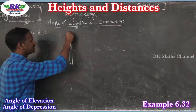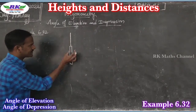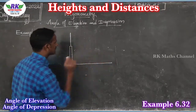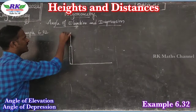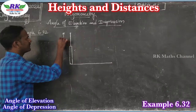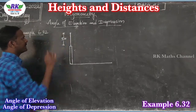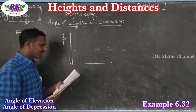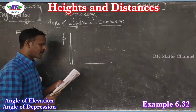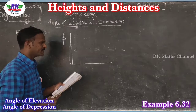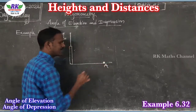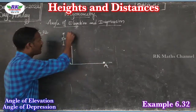The pole is on top of the tower. There is a point A on the ground level. The angle of elevation of the top of the pole observed from point A on the ground is 60 degrees.